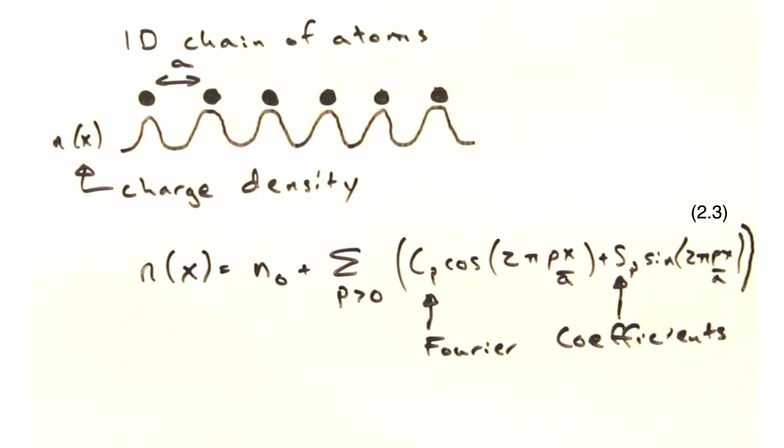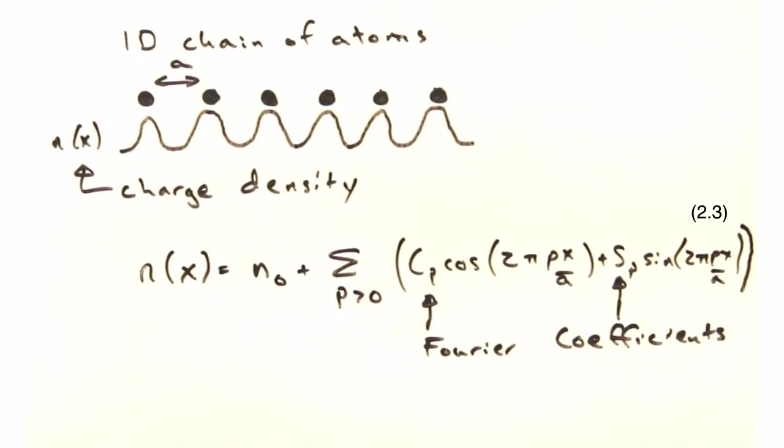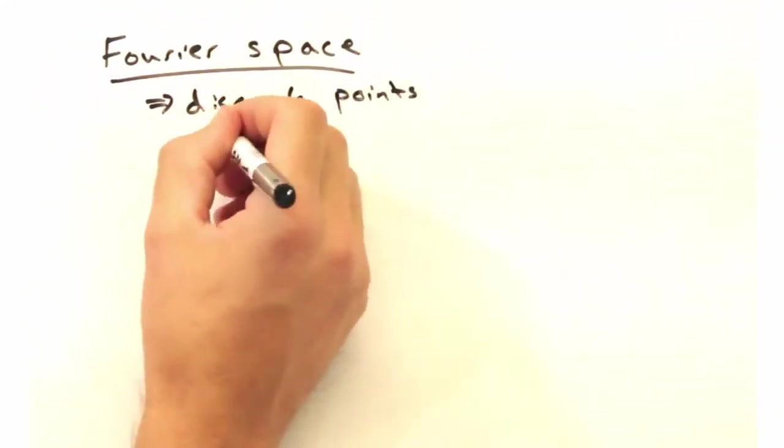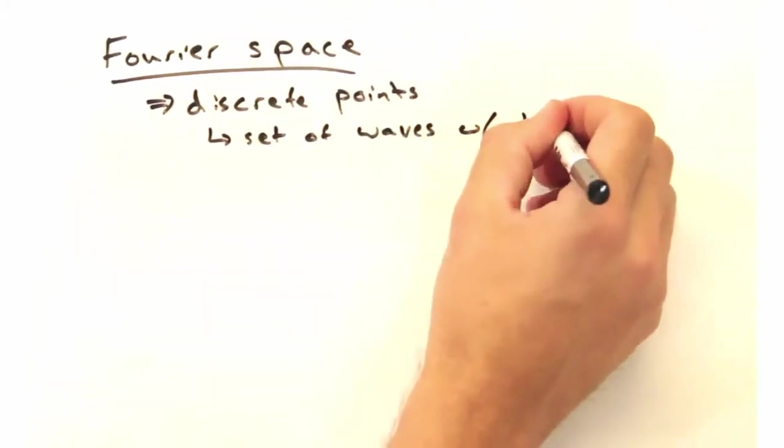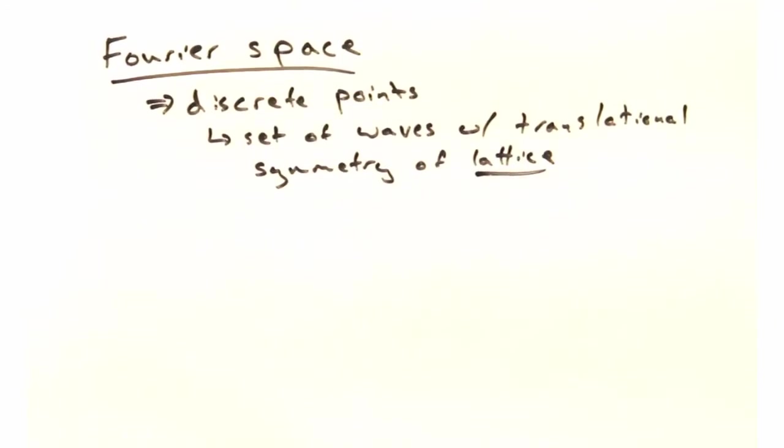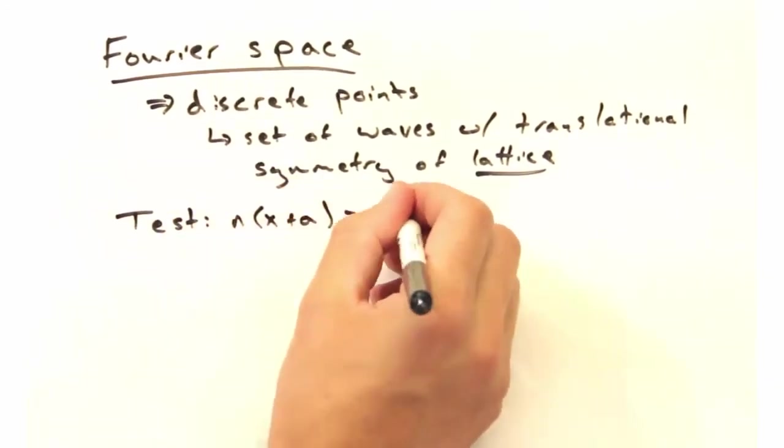Where we're summing over only positive values of the integer p. So this makes our Fourier space a set of discrete points where the allowed points are associated with waves that are consistent with the translational symmetry of the lattice. So that's a big claim to make. How would you test that?